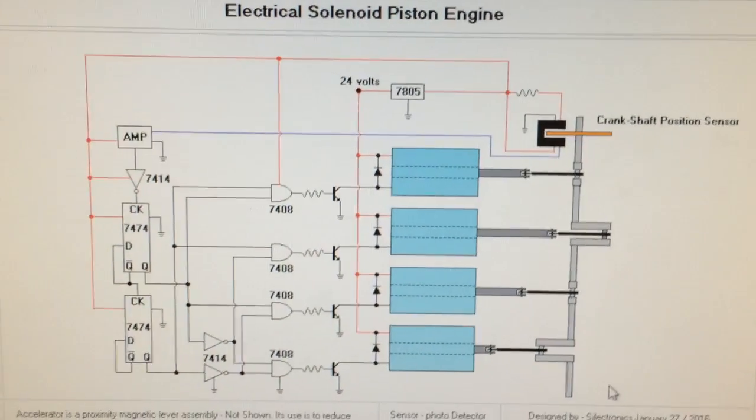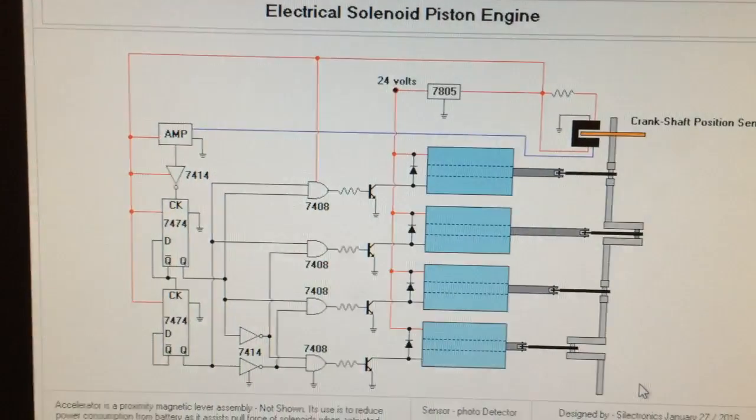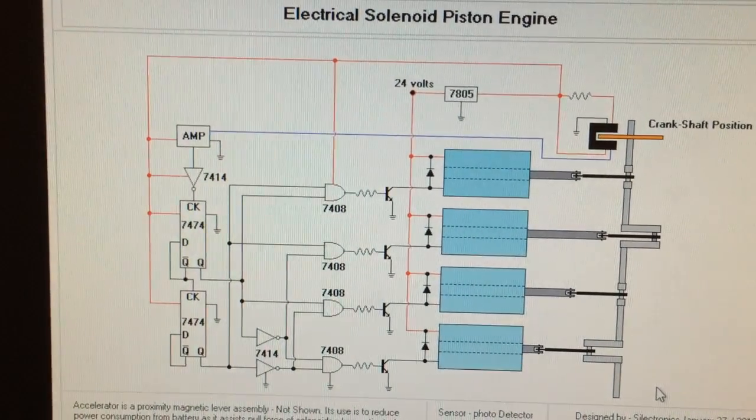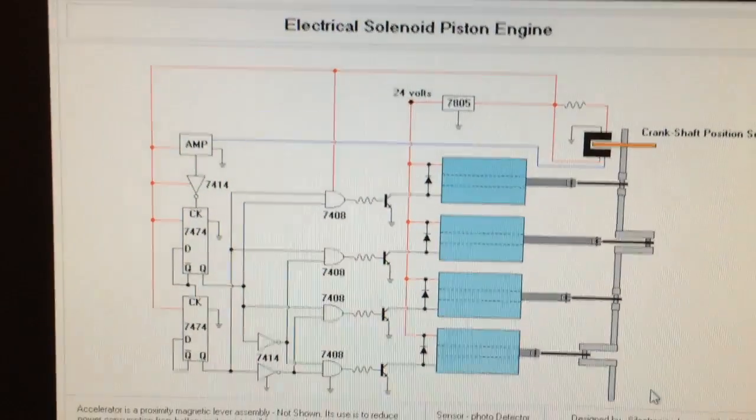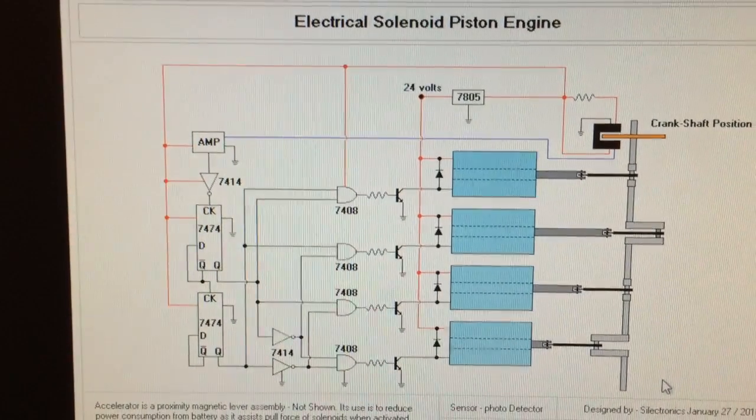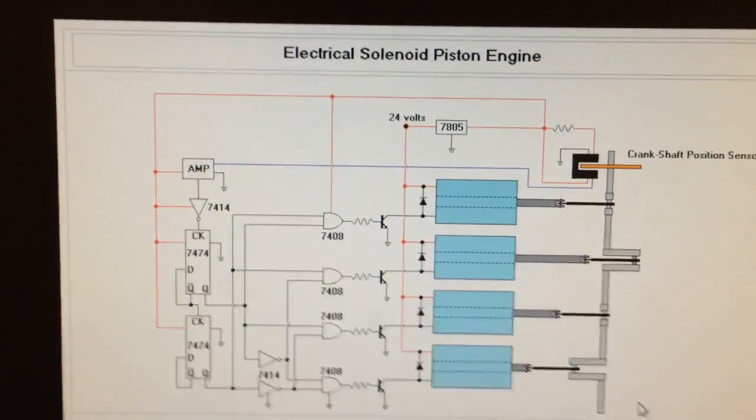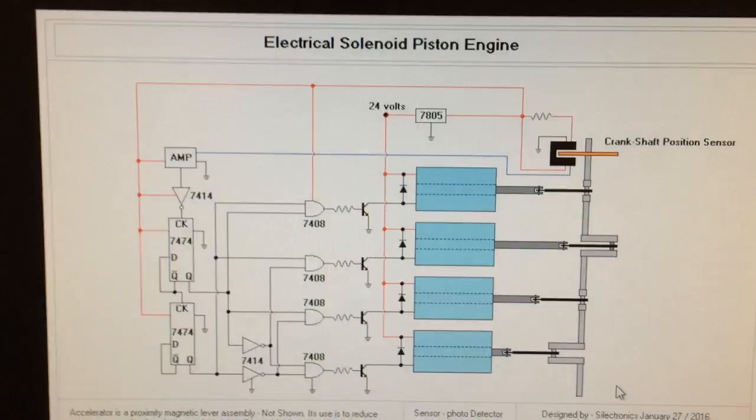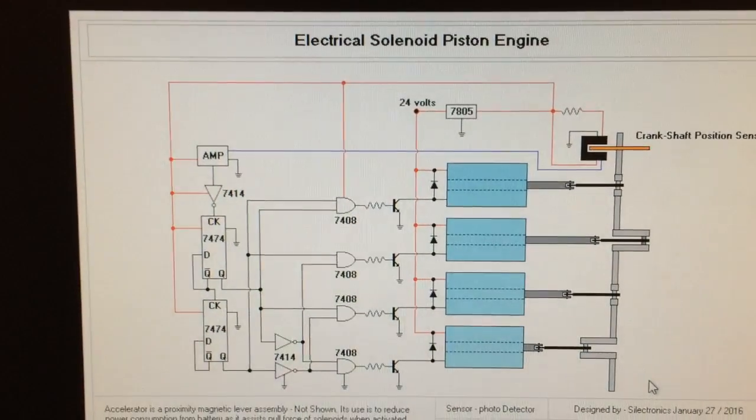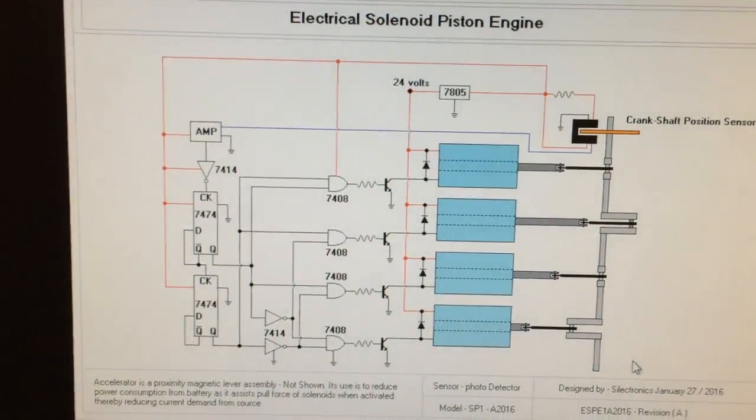What it does is it sends pulses into an amplifier, going to a counter. Actually, these are pulse generators, so they send signals into the AND gates here, 7408s.